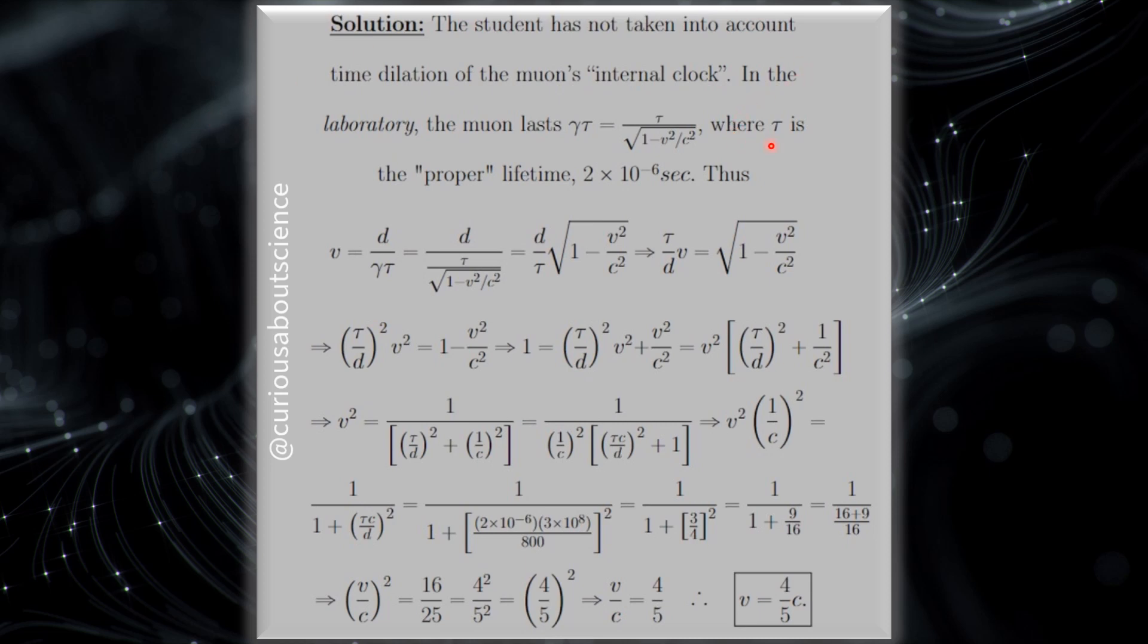So tau is the proper, quote-unquote, time 2 times 10 to the negative 6 seconds, proper meaning being in the frame of reference of the moving object. So here, V is actually equal to D over the dilated time, which is gamma tau. So if we plug everything in, we see that we have tau over the square root.